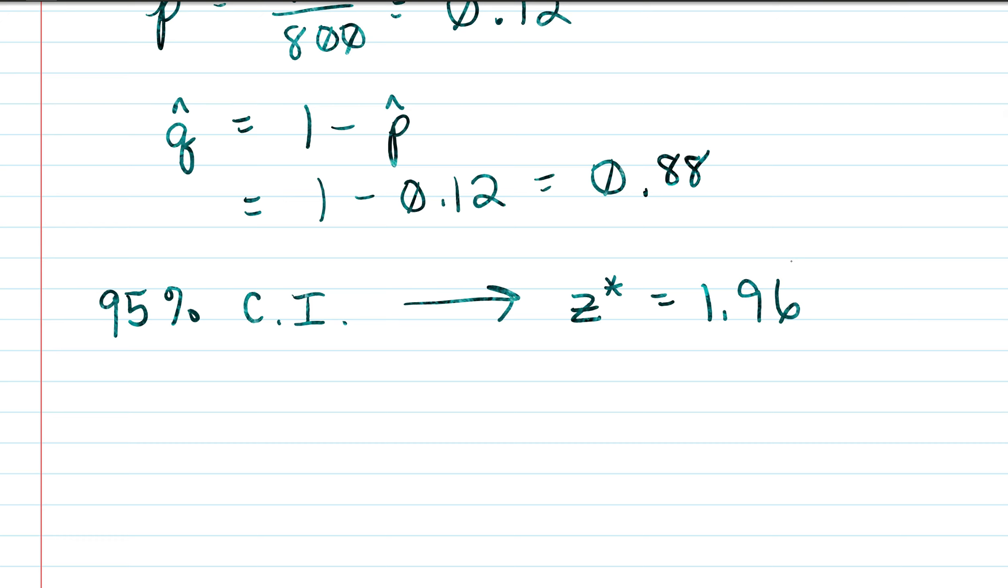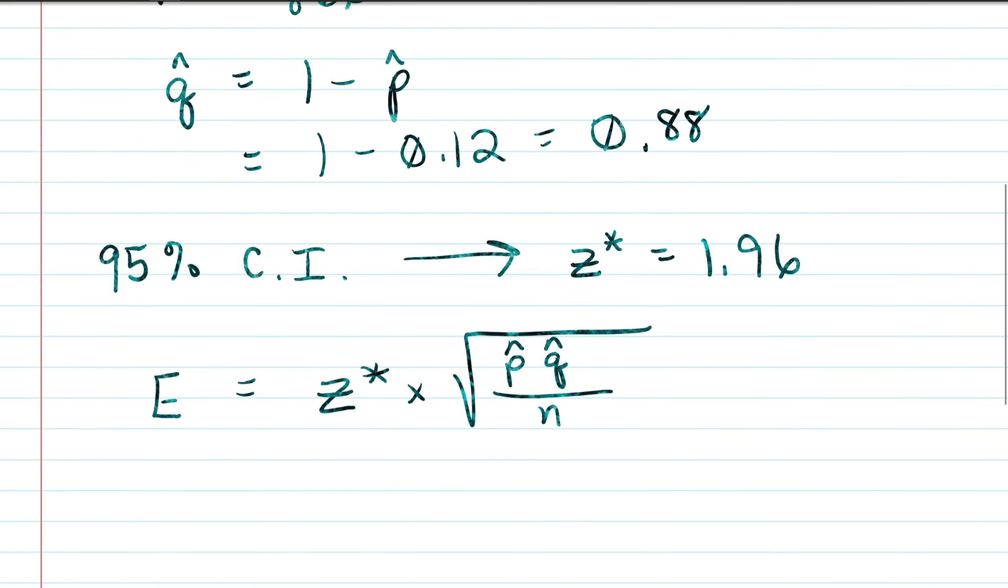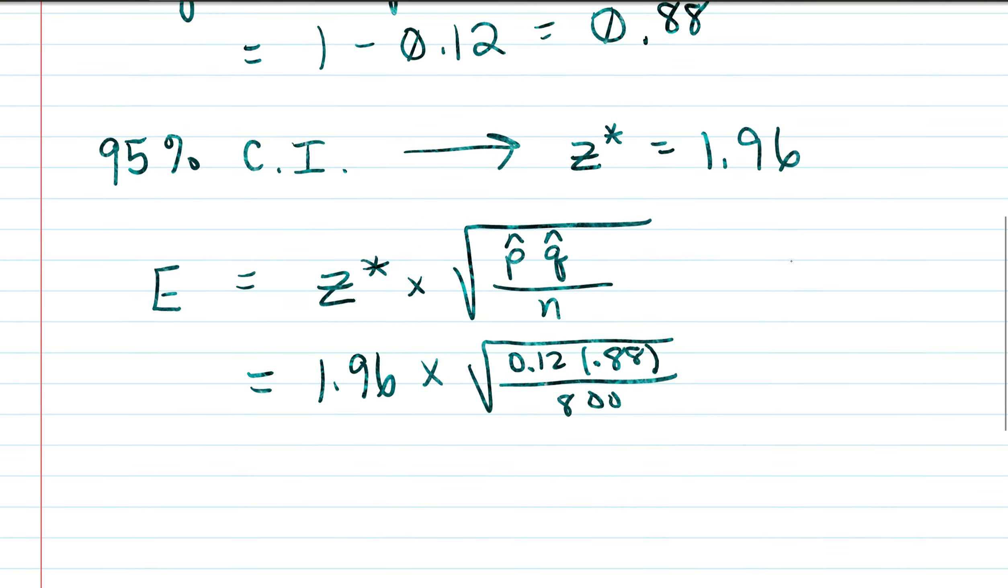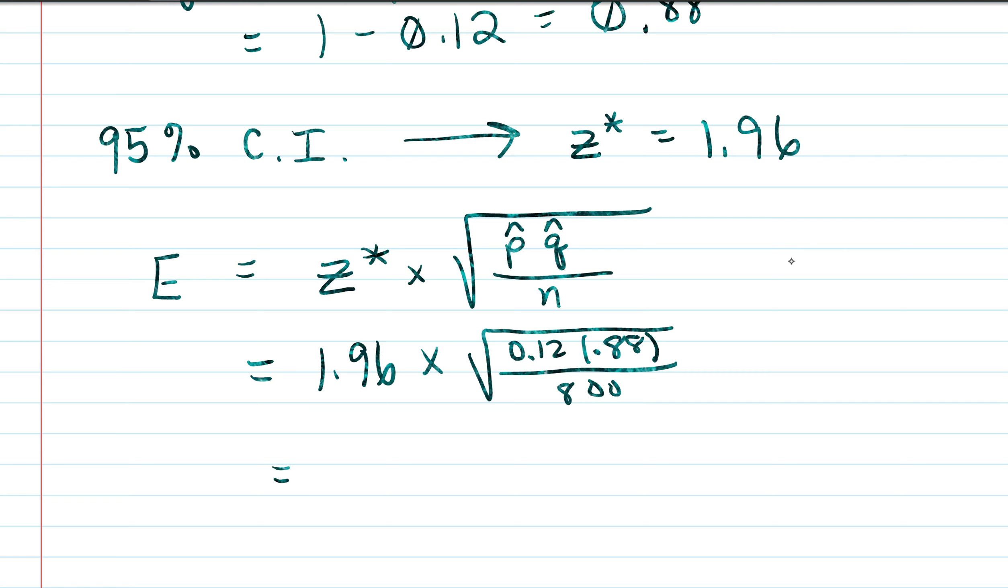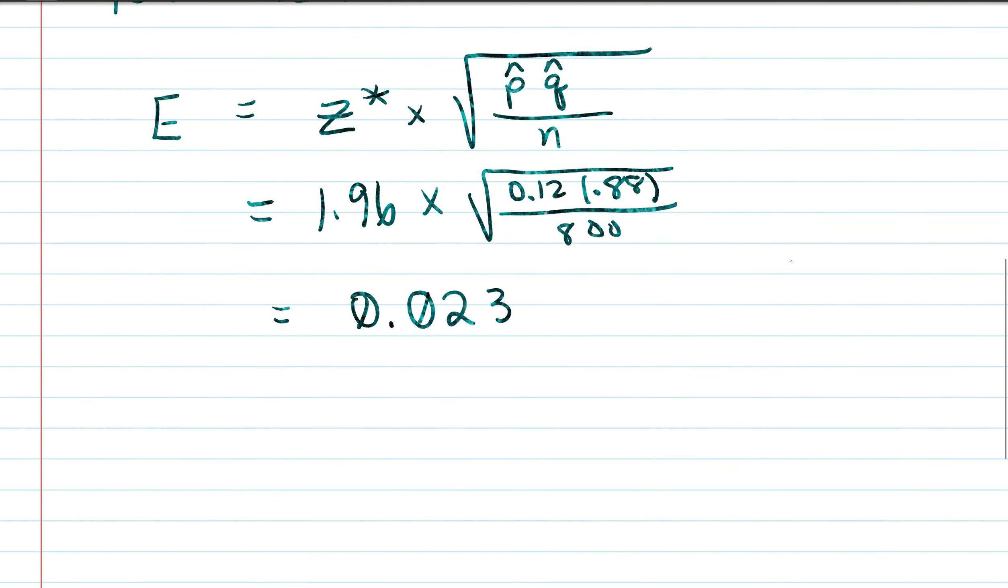All right so next we're going to figure out the margin of error and the margin of error is basically our z-asterisk times the square root of p-hat times q-hat all divided by n. All right so that gives us 1.96 times 0.12 times 0.88 divided by our 800. All right now taking some time just crunching those numbers in the calculator we should get approximately 0.023. All right so we found our margin of error.